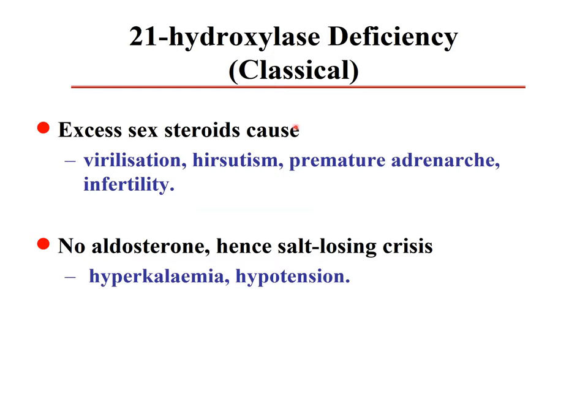21-hydroxylase deficiency causes virilization, hirsutism, premature adrenarche, infertility, and no aldosterone — resulting in salt-losing crisis, hyperkalemia, and hypotension. In newborns, if the baby presents in circulatory shock, steroid levels should be measured to rule out hydroxylase deficiency, and the patient should be treated immediately with mineralocorticoids and glucocorticoids. Sometimes there is only a minor enzyme defect that manifests later in life.